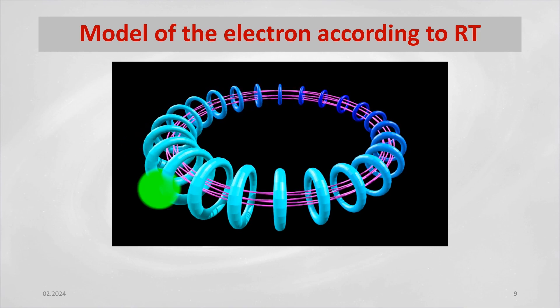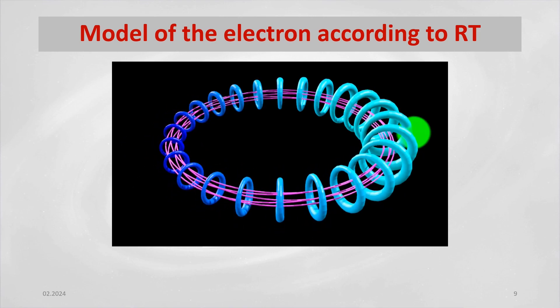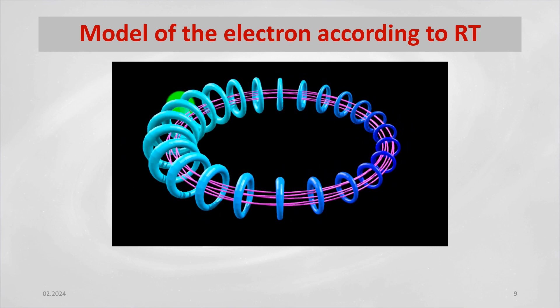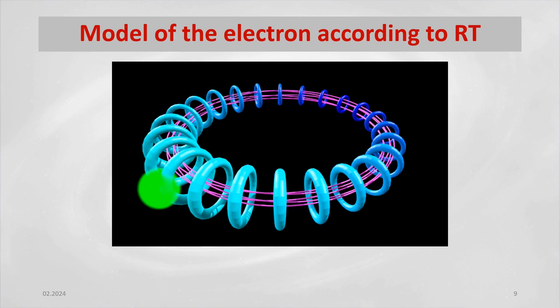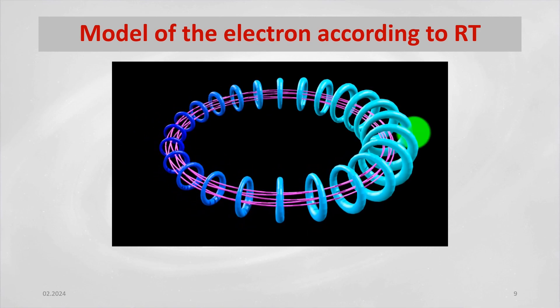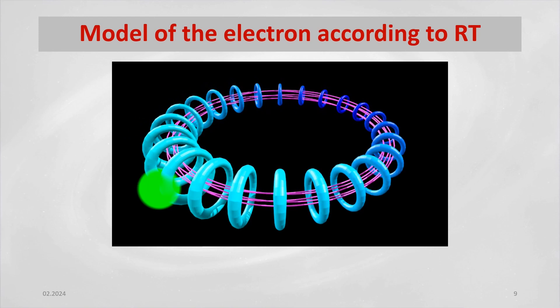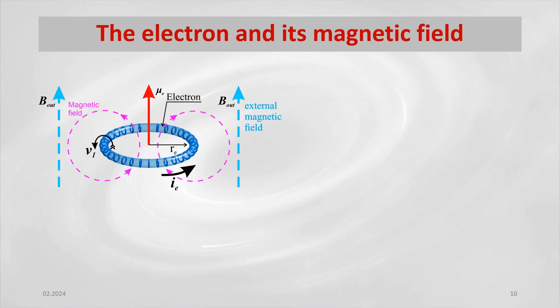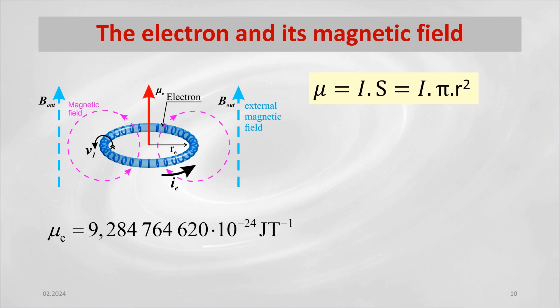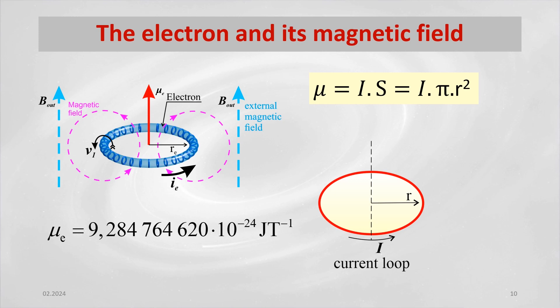However, if we use the ring structure of the electron model designed according to the ring theory, which is modeled as a multi-level oscillating toroidal object with a rotating charge, we can explain this phenomenon. If we assume that the electron has an experimentally determined and measured magnetic moment, then this model of the electron can be viewed as a circular current loop of radius r, through which current i flows and its magnetic moment is mu.